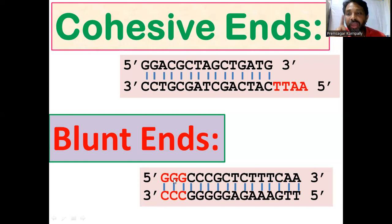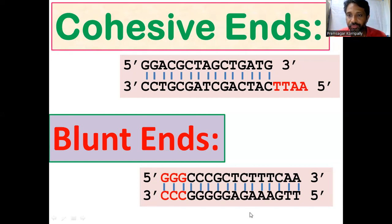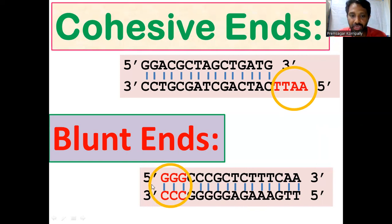Cohesive ends have unpaired nucleotides — they are single-stranded. You will see the definition of cohesive ends and blunt ends in the next slide. Here, this is a cohesive end and this is a blunt end.